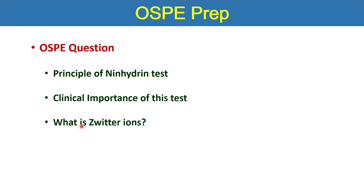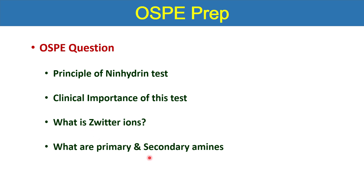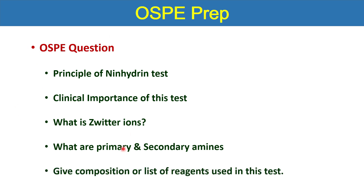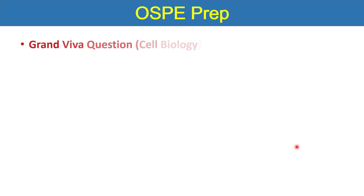You may also be asked what primary or secondary amines are — these are table VIVA questions related to the ninhydrin test. For the composition of reagents used: ninhydrin test uses ninhydrin solution — 0.5 grams of ninhydrin in 100 ml of acetone. Only two chemicals are used. Related to cell biology in Block 1, you should also know what can be asked in the grand VIVA.